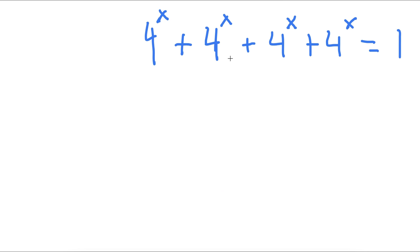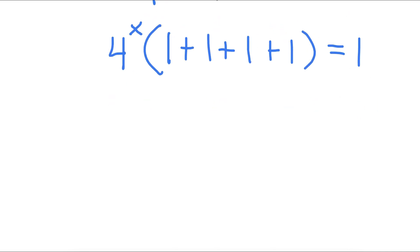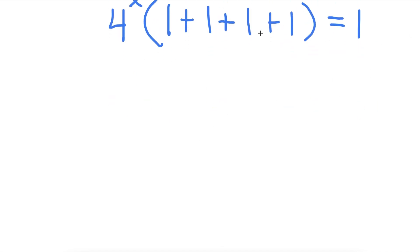In this problem, I have 4 to the power of x plus 4 to the power of x plus 4 to the power of x plus 4 to the power of x is equal to 1. The first thing I'm going to do is factor out 4 to the power of x. So now I have 4 to the power of x times 1 plus 1 plus 1 plus 1 equals 1. Simplifying what's in the parentheses gives 4, so I have 4 to the power of x times 4 equals 1.